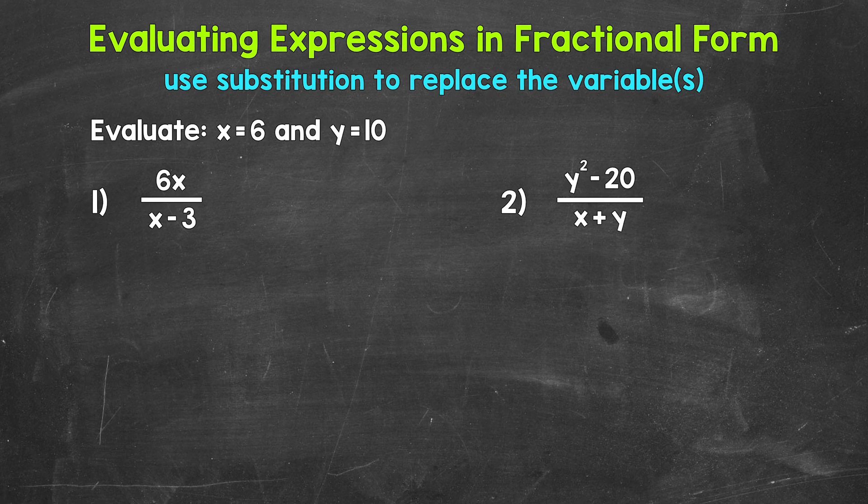Let's jump into number 1, where we have 6x over x minus 3. Now that fraction bar just means division. We have the numerator, the top, divided by the denominator, the bottom. So we work through the top, work through the bottom, then divide.